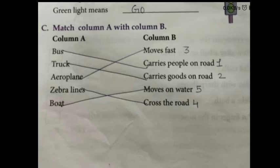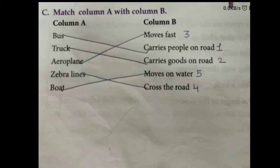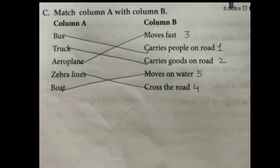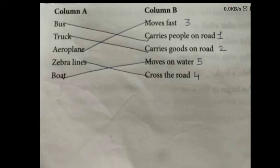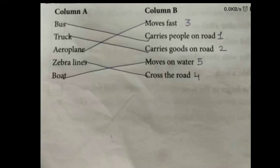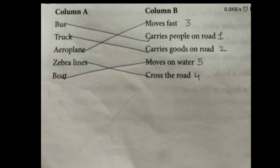Next is aeroplane — it moves fast. Yarni ki aeroplane bohot jaldi aapko aapki destination par pahuncha deta hai. Then we have a zebra line — zebra lines ka matlab hai cross the road. Yarni ki jo white aur black color ki lines bani hoti hai, aap us zebra line pe road cross kar sakti hai. And the last is boat — boat moves on water. Woh paani mein move karti hai. Thank you students for watching the video.